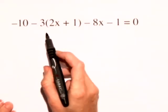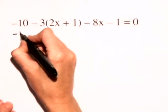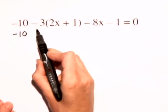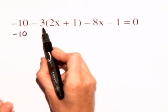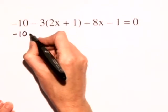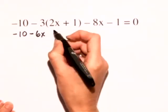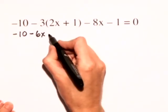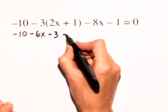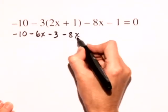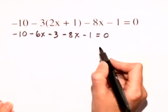So first, we need to distribute. And we have negative 10. When we distribute, we're distributing the negative 3 through the parentheses. So we have minus 6x and then minus 3 minus the 8x minus 1 is equal to 0.